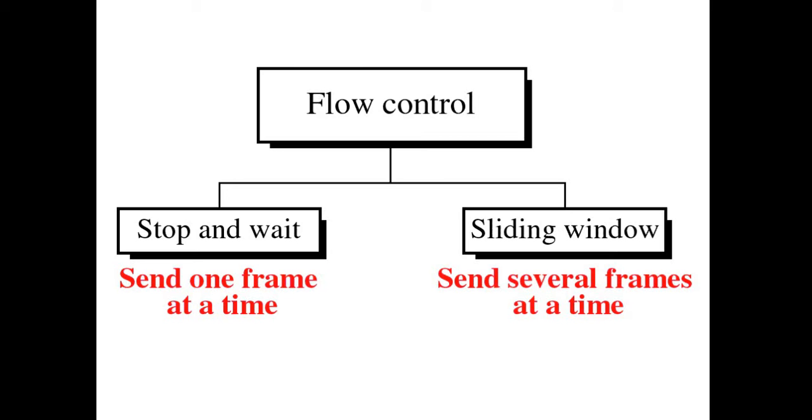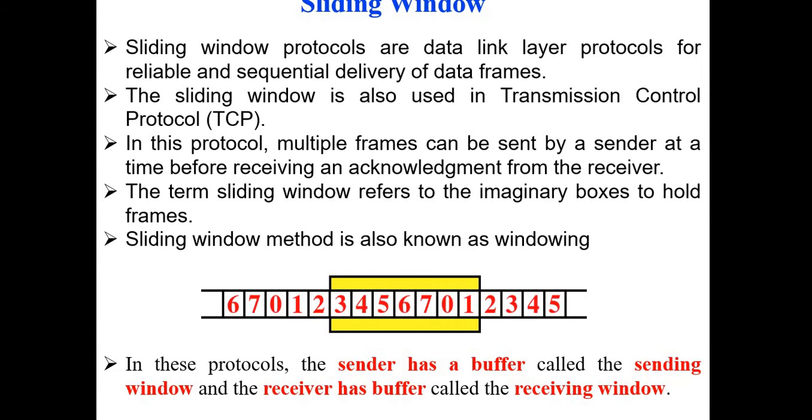When the data frame has not reached the receiver's site, the receiver does not give an acknowledgement to the sender. And the sender has to retransmit the data, that is Automatic Repeat Request.